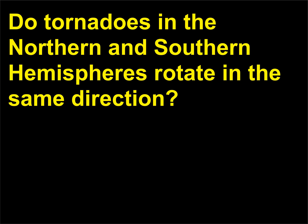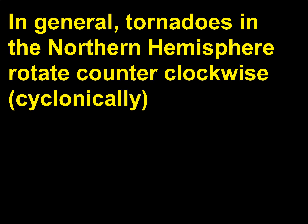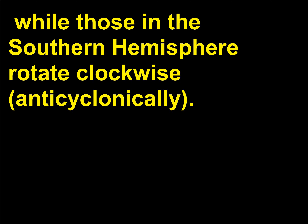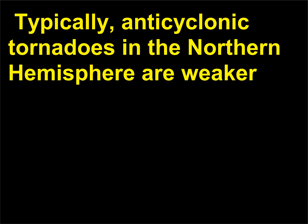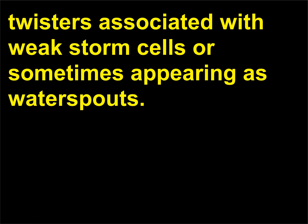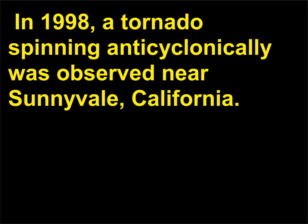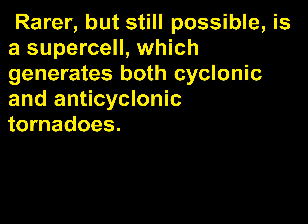Do tornadoes in the northern and southern hemispheres rotate in the same direction? In general, tornadoes in the northern hemisphere rotate counter-clockwise (cyclonically), while those in the southern hemisphere rotate clockwise (anticyclonically). Occasionally, anticyclonic tornadoes have been observed in the northern hemisphere; typically they are weaker, associated with weak storm cells, or sometimes appearing as waterspouts. In 1998, a tornado spinning anticyclonically was observed near Sunnyvale, California. Rarer but still possible is a supercell which generates both cyclonic and anticyclonic tornadoes.